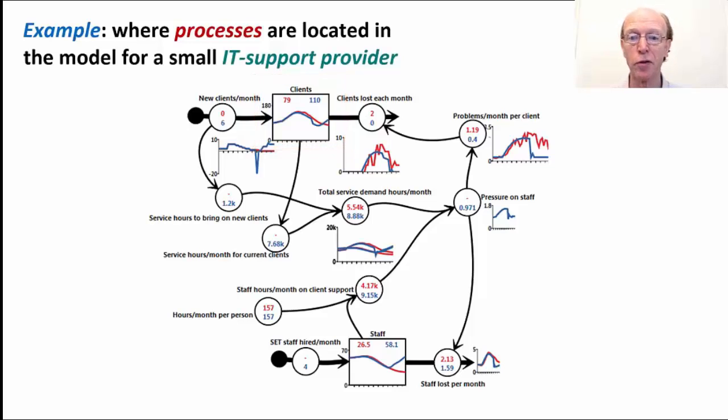The blue line is a possible solution to this where you suffer an immediate short term loss of more clients, but then the business is able to recover. Why does that happen? Well, the model actually explains that the client loss rate to the right of that stock of clients is being driven by high rates of problems that the clients are experiencing. That rate of problems is much higher than is normal and much higher than is acceptable. Where does that come from? That comes from a mismatch in the middle between the total service demand that's coming from the clients and the capacity of the staff at the bottom of the page to fulfill that service demand from the clients.